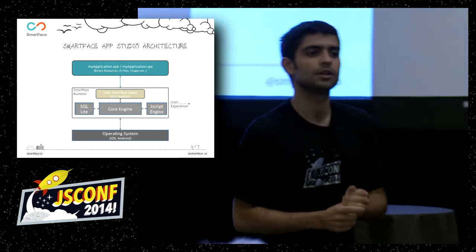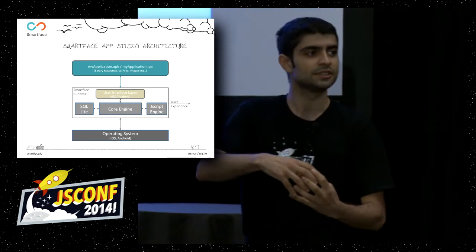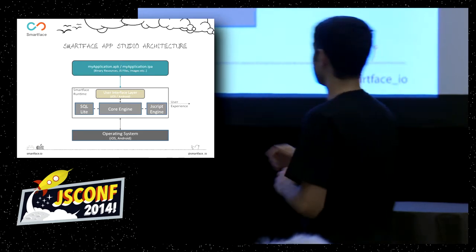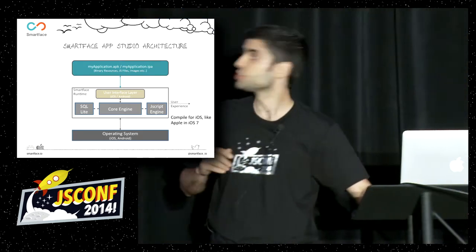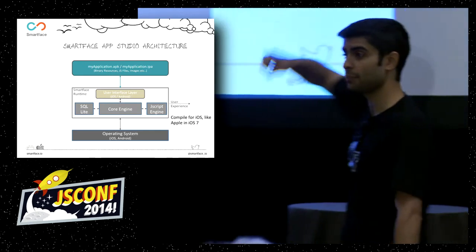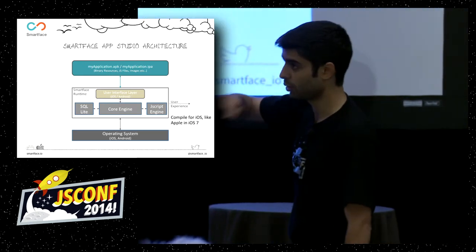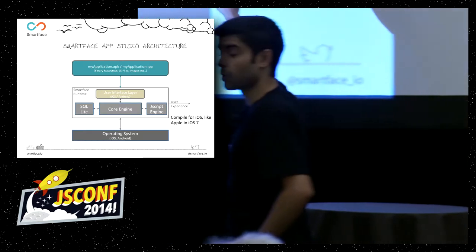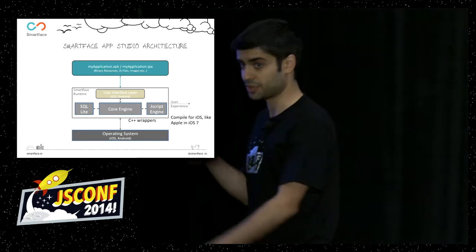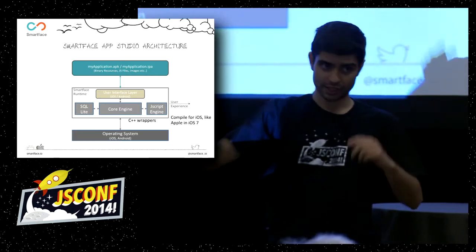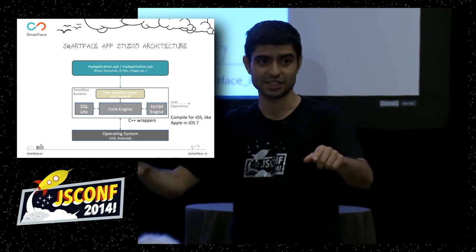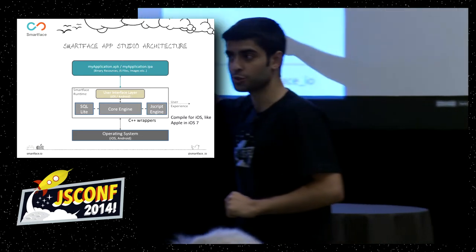That's why what we've done is we took WebKit, specifically WebKit 1, took out the DOM inside, and put our core engine. What our core engine does: you write your JavaScript code, and we compile this engine — a JavaScript engine for iOS, like Apple did for iOS 7. We wrote C++ wrappers and put them into the core engine. This looks for Java and Objective-C libraries inside the devices and matches your JavaScript code to those libraries.